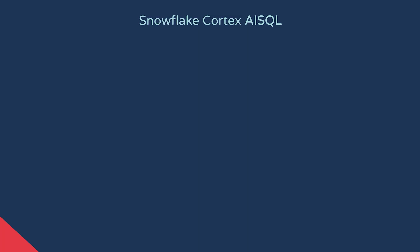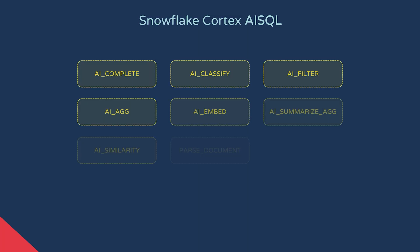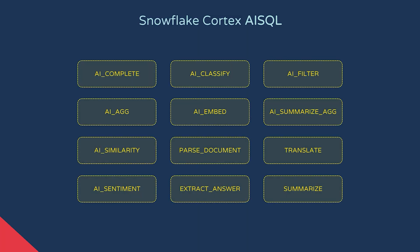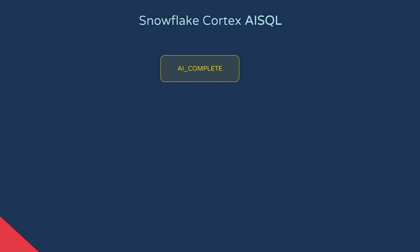Cortex AI SQL is basically about extending the SQL language with AI-related functions you can execute anytime you'd use a function normally. There are many available, but let's zoom in on one to help us get a better sense of what they're used for.